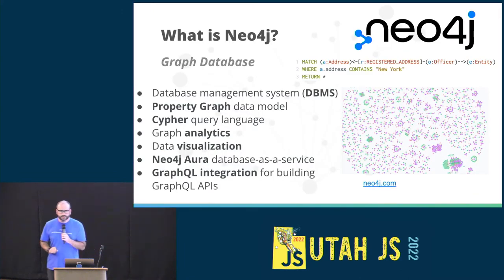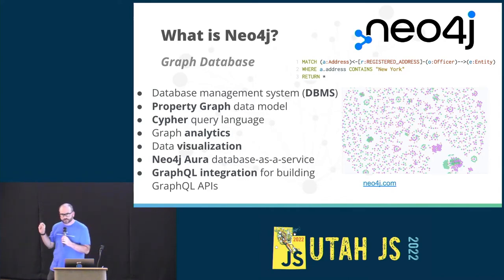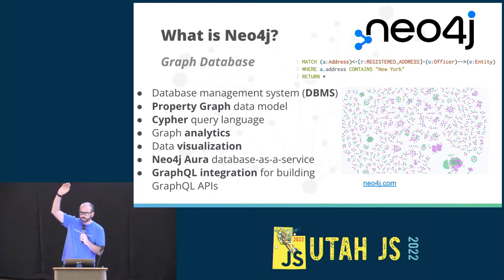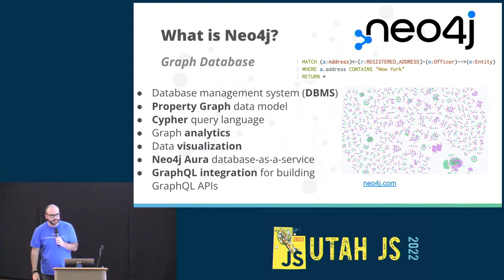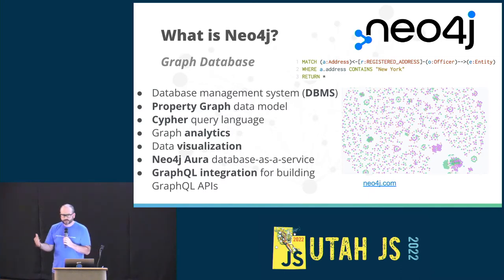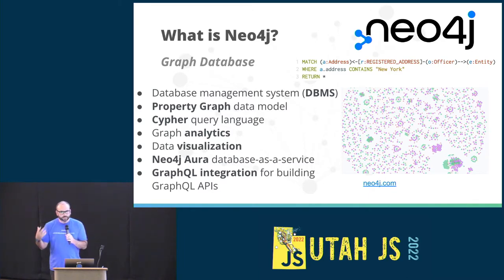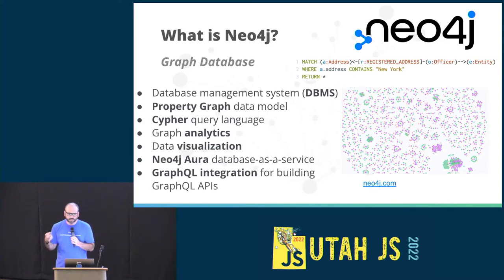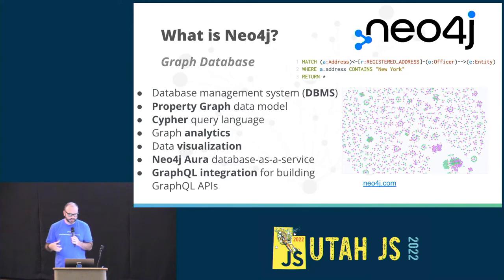I want to talk a little bit about Neo4j — that '4j' is for JavaScript, by the way. Neo4j is a graph database. So what that means is, like other databases such as relational or document databases, the data model is not tables or documents. The data model is a graph, and we're going to talk a lot about what a graph is and how that relates to GraphQL.